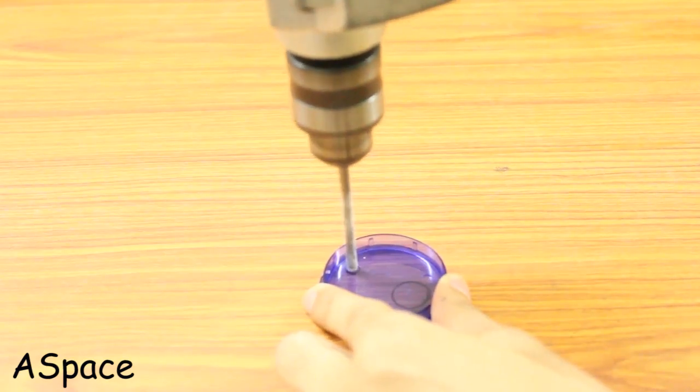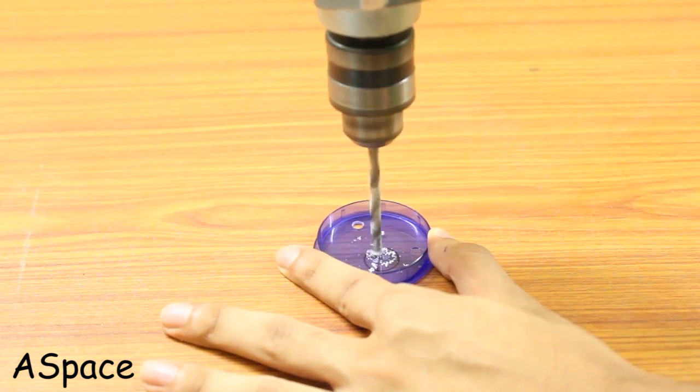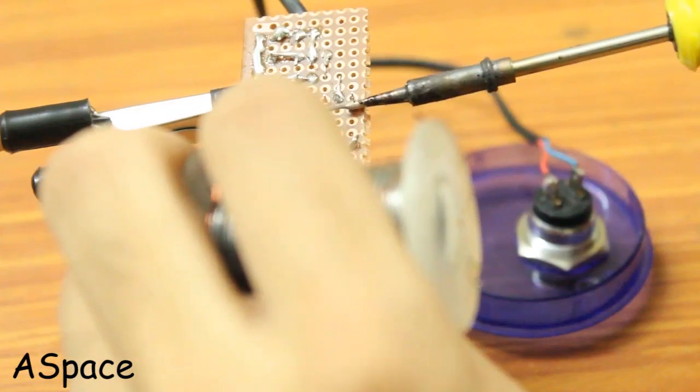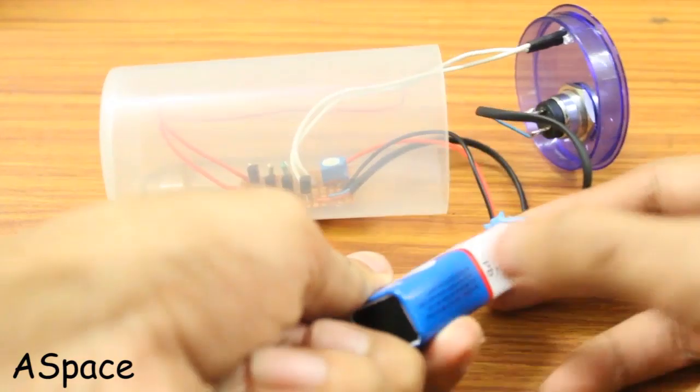Strip two single stranded wires and solder them on the LED. Time to pack everything in an enclosure. Drill two holes, one for the LED and the other for the momentary switch. Solder the momentary switch to the board. Connect the battery and the project is complete.